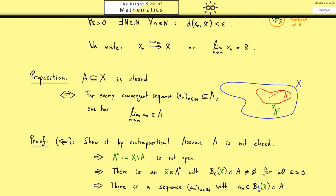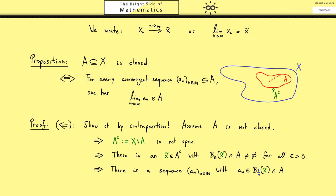So this is our result. We now have a sequence in A which is convergent but its limit is not in A. So this was our proof by contraposition which means this implication is now finished.